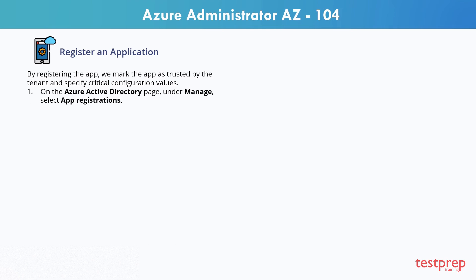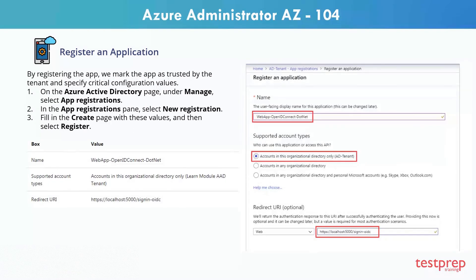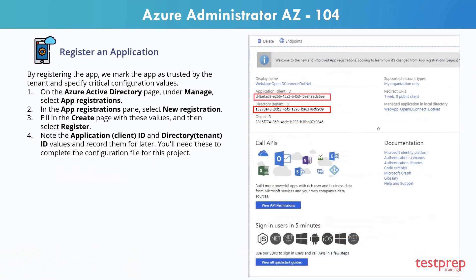On the Azure Active Directory page, under Manage, select App Registrations. In the App Registrations pane, select New Registration. Fill in the registration page with the required values and select Register. On the next page, note the Application ID and Directory ID values, and record them for later — you'll need these to complete the configuration file for this project.